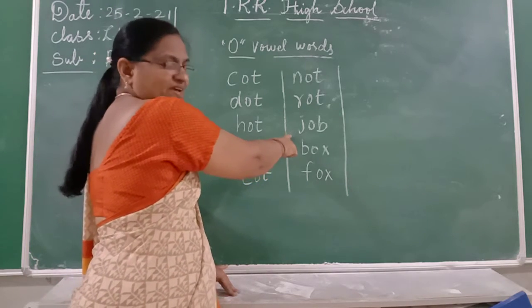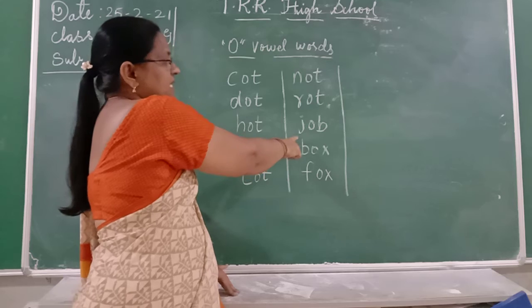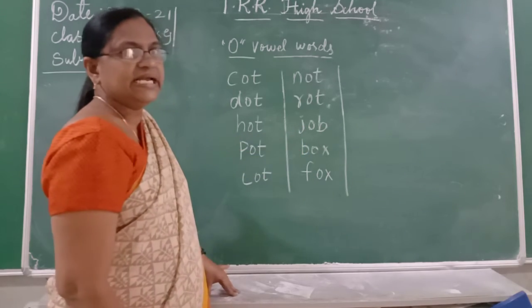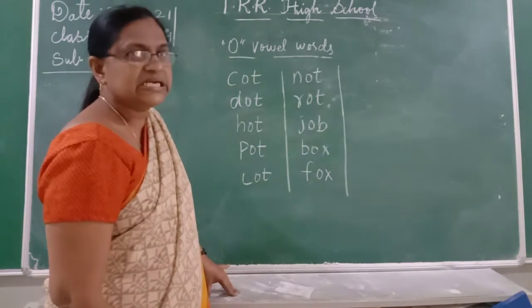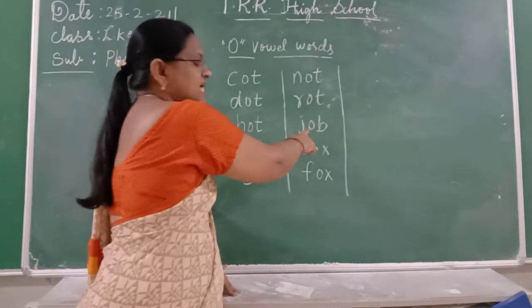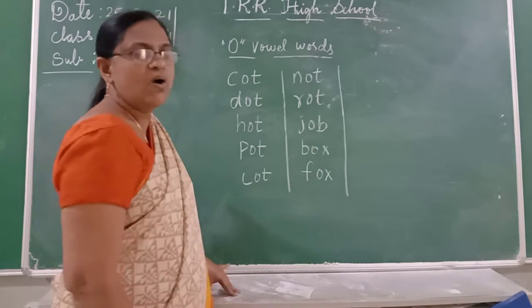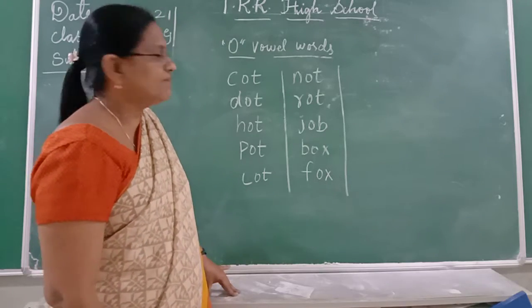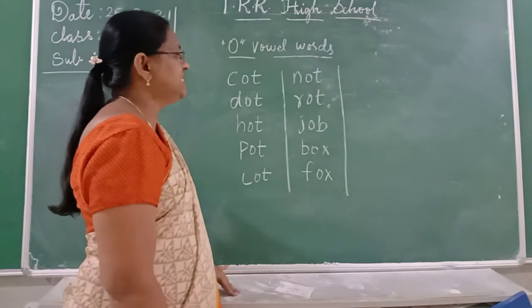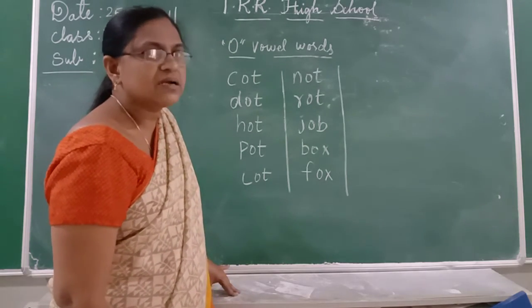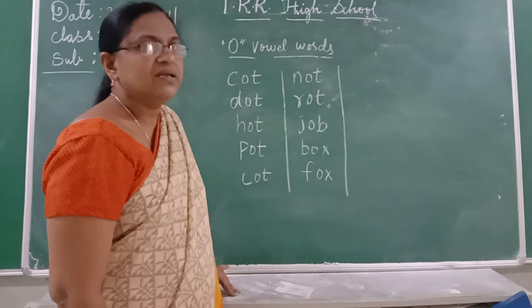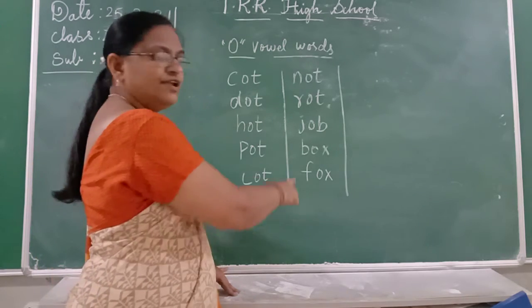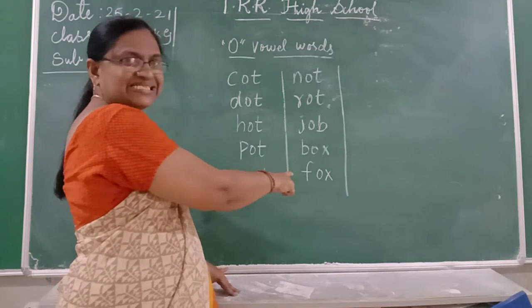The next word is J. What is the sound of J? J. And what is the sound of O? O. And what is the sound of B? B. J-O-B. Job. Job.